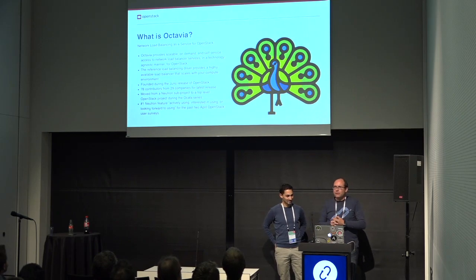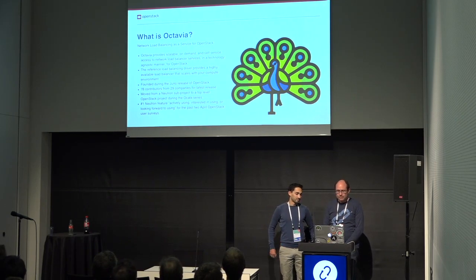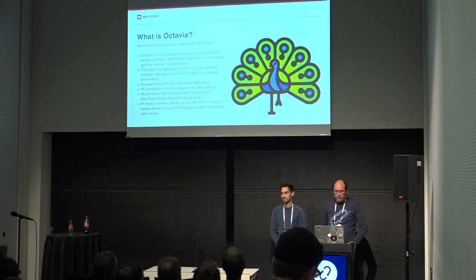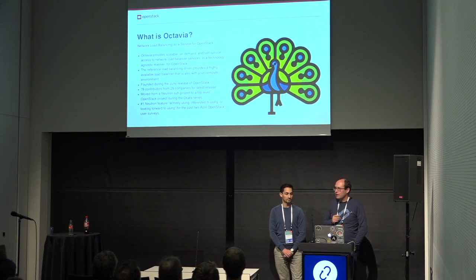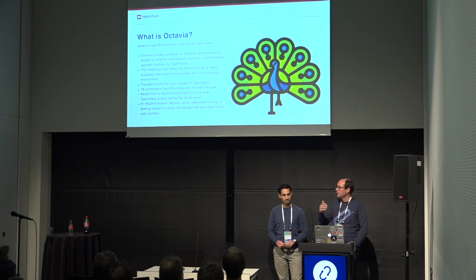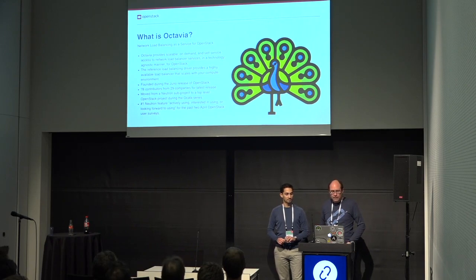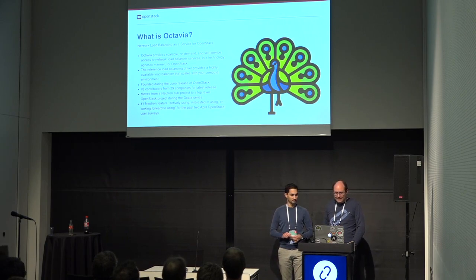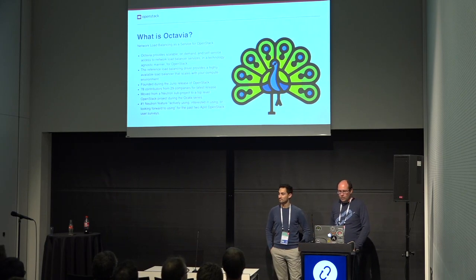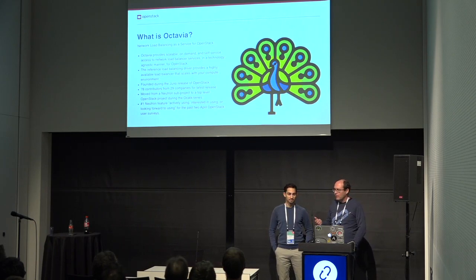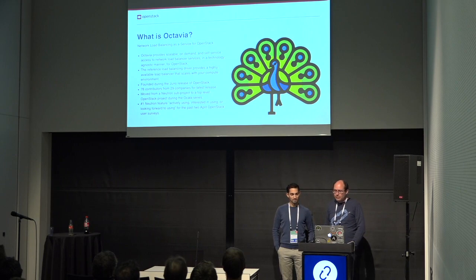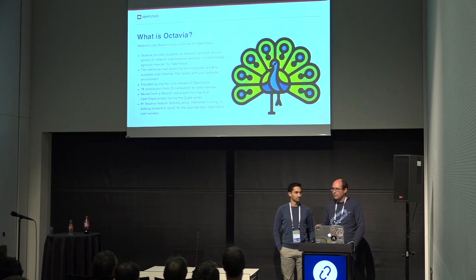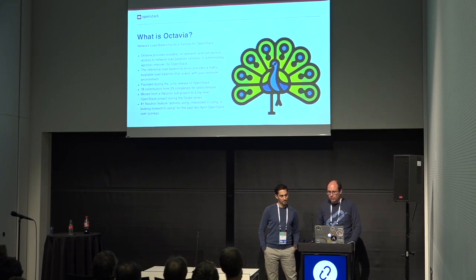So let's get started for people who are new to Octavia — what are we? We are load balancing as a service for OpenStack. Octavia provides scalable, on-demand, and self-service access to network load balancing in a technology-agnostic manner for OpenStack. Our reference driver, which we now call the Amphora driver, is a highly available active-passive load balancer that scales with your compute needs. You can make as many load balancers as you have servers in your data center.